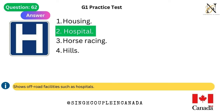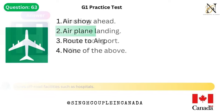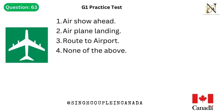Question 63. This traffic sign means: 1. Air show ahead. 2. Airplane landing. 3. Route to airport. 4. None of the above. Answer is 3. Route to airport.